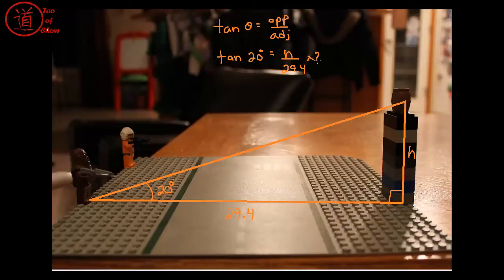Multiply both sides by 29.4. And those two will eliminate each other. And so we have h is equal to 29.4 times tan 20. And h, we will find, is equal to 10.7.